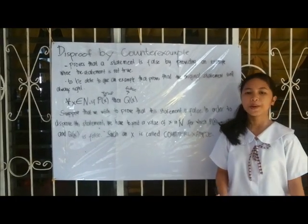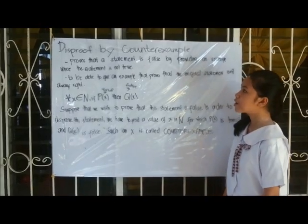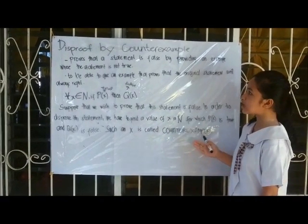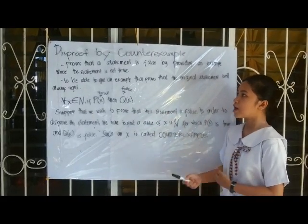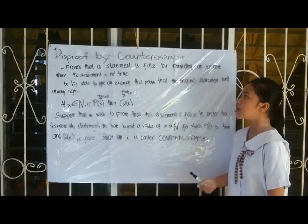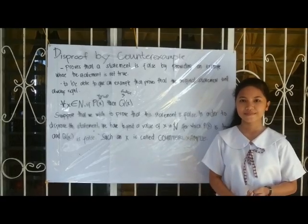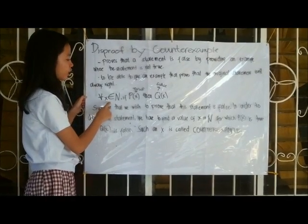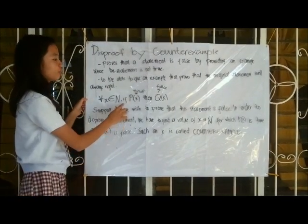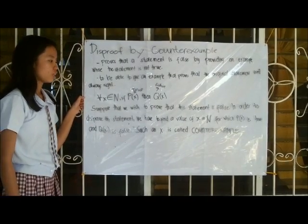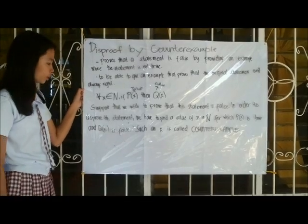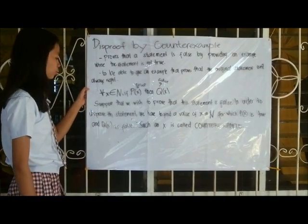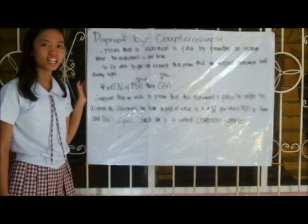We have been proving statements true by proof by contradiction and proof by cases. Now here we are with disproof by counterexample, proving a statement false. Proof by counterexample proves a statement is false by providing an example where the statement is not true. Its purpose is to show that the original statement isn't always right. For a statement of the form 'for all x in a set, if P(x) is true then Q(x) is true,' to disprove it we find a value of x for which P(x) is true but Q(x) is false — this x is called a counterexample.